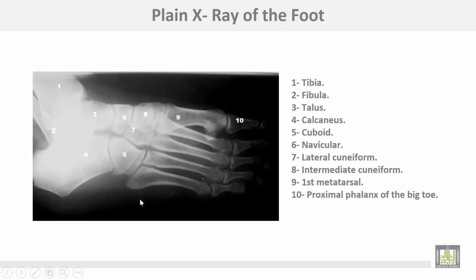This plain X-ray of the foot shows the lower end of the tibia, the lower end of the fibula, the talus, the calcaneus, the cuboid bone, the navicular bone, the lateral cuneiform, the intermediate cuneiform, the first metatarsal, and the proximal phalanx of the big toe.